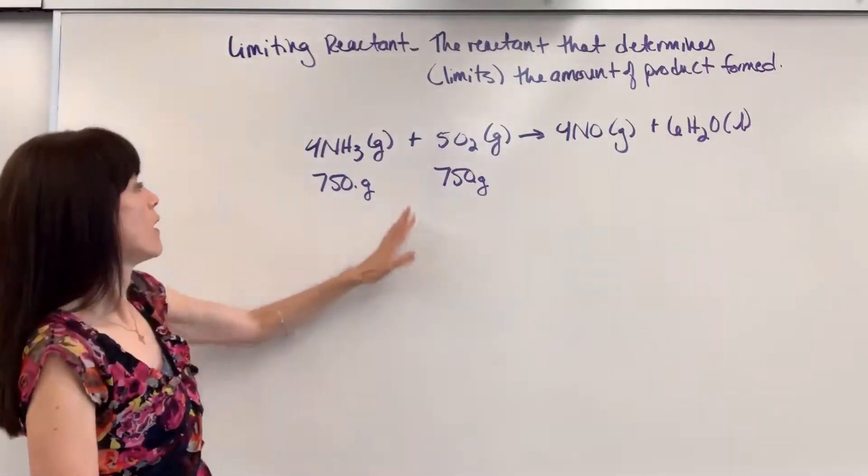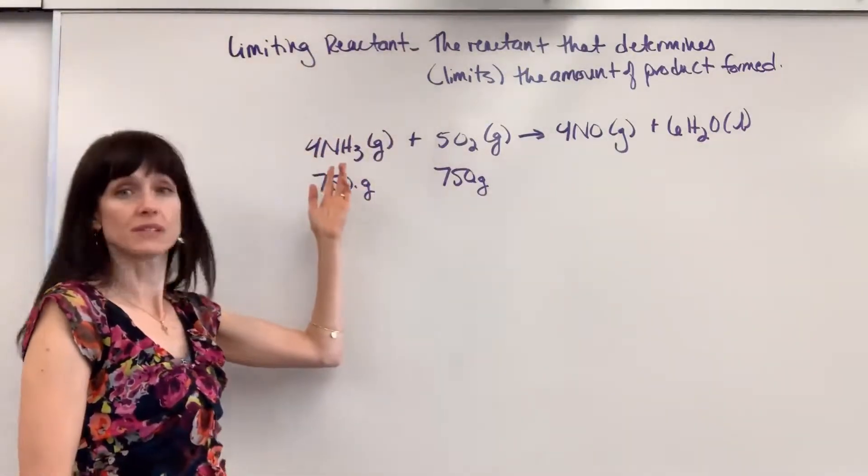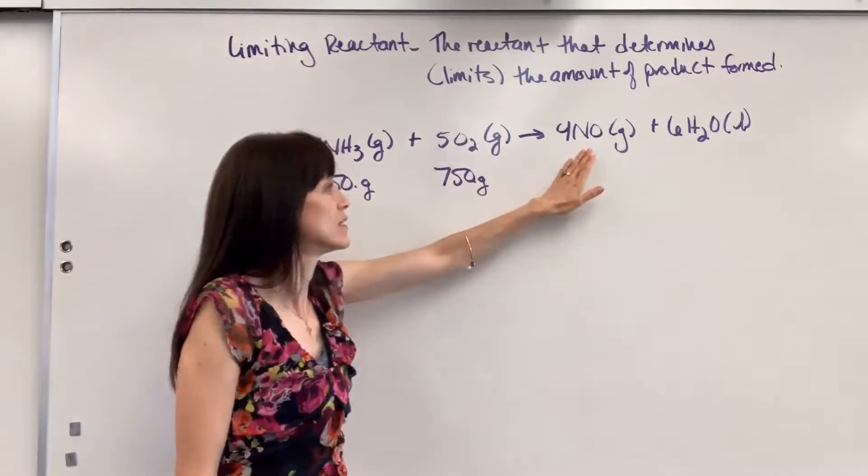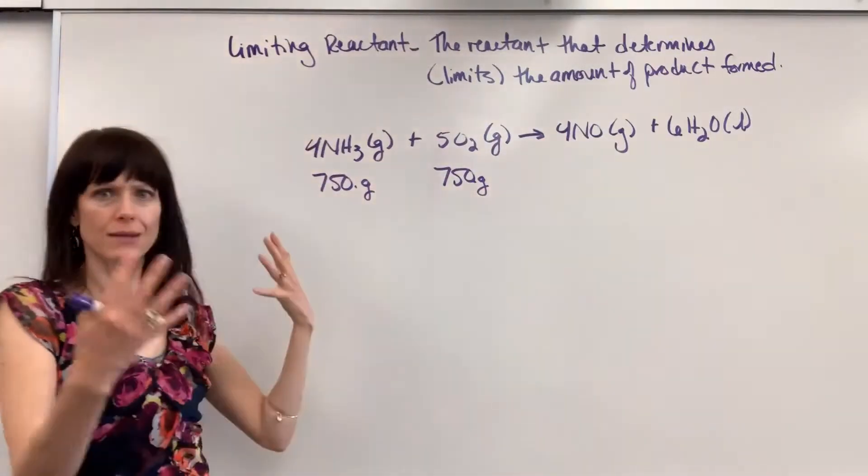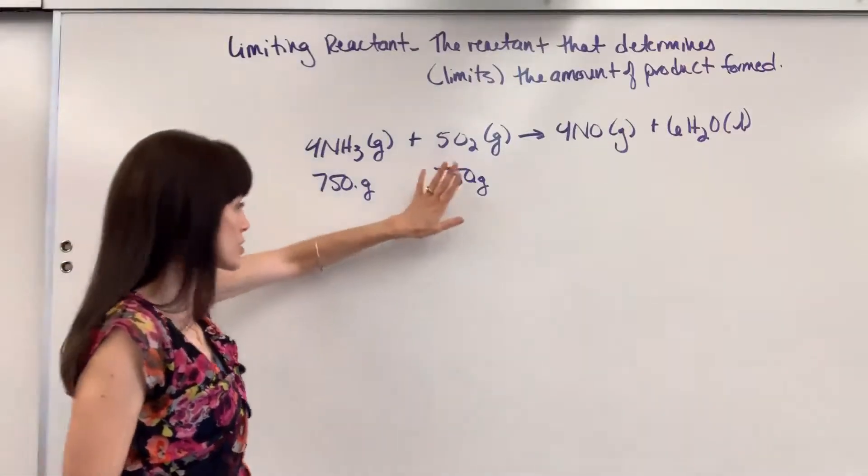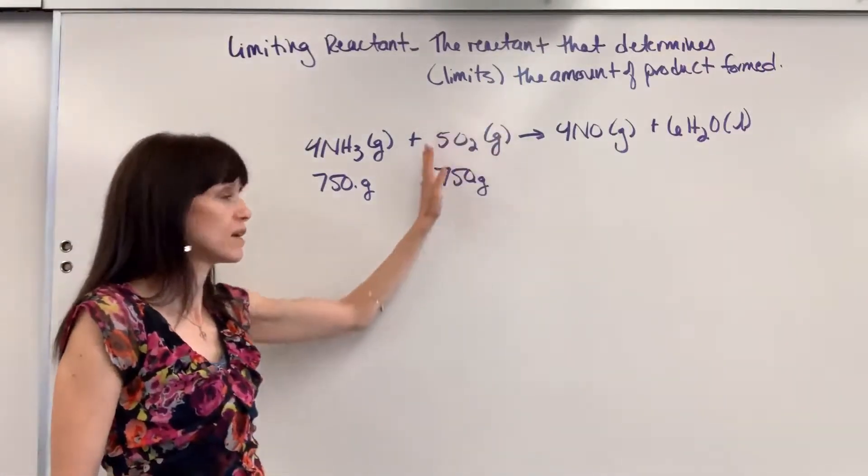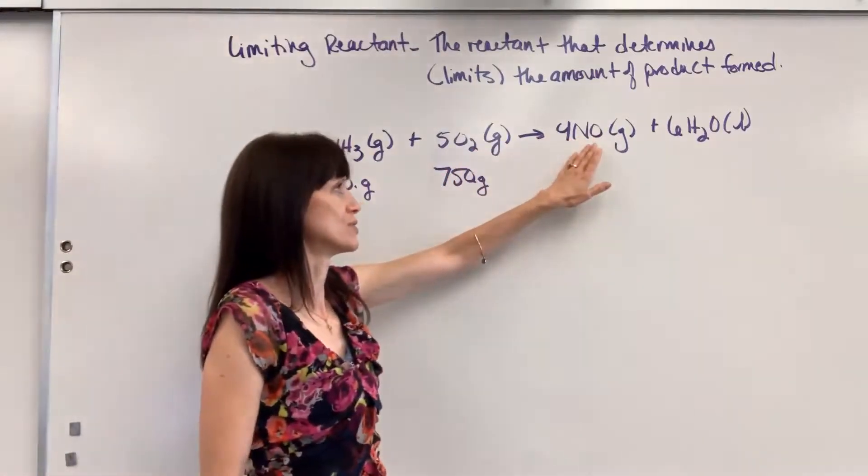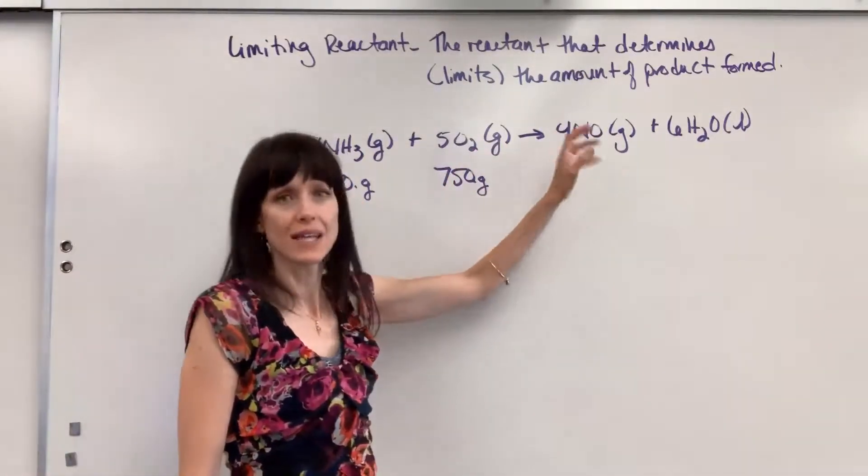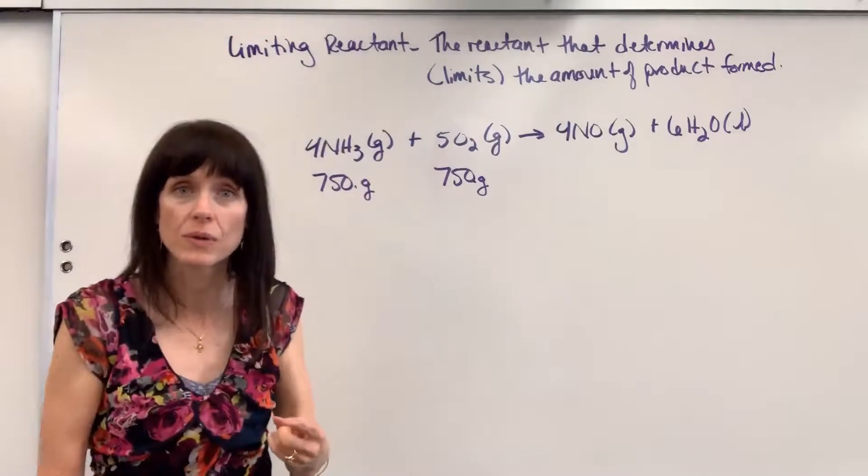and we're going to compare both of these to that one product. So you're asking yourself, okay, if I can consume all 750 grams of this ammonia, how much of the nitrogen monoxide will be produced? Second question, well, if I can consume all of the 750 grams of oxygen, how much of that nitrogen monoxide can be produced? And then we compare.